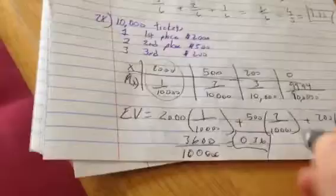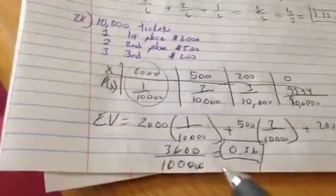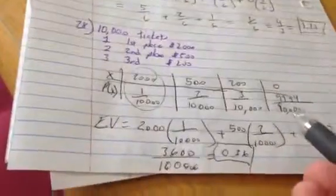So your expected winnings for this raffle is $0.36. Now, we're done, it's okay, but this is a ridiculous problem.